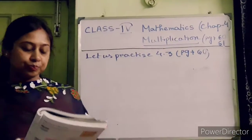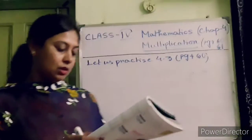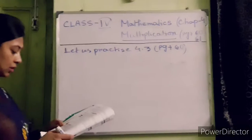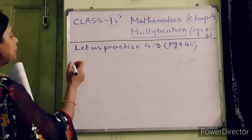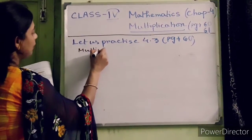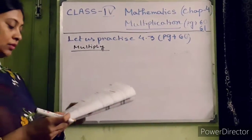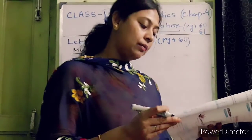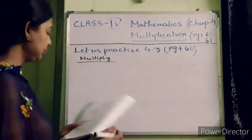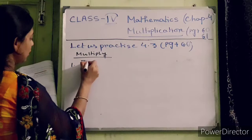Hello students, in this video I'm going to start the multiplication chapter. Let us practice 4.3. Now first, you have to multiply with the following numbers. Number one, I'm doing 10,000.